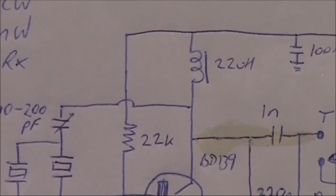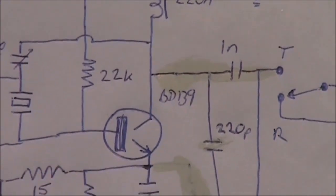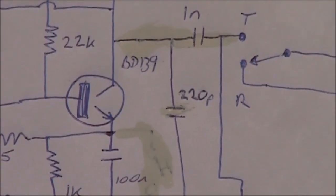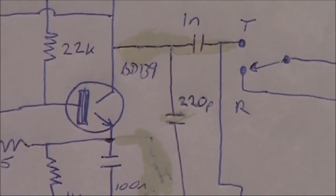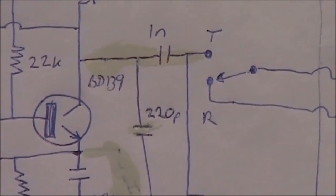The 22 microhenry inductor up there is a RF choke that's pre-wound. You'll notice there's a 220 picofarad from the collector to the ground, that was necessary to ensure the oscillator operated reliably.